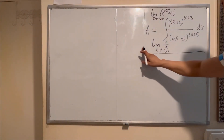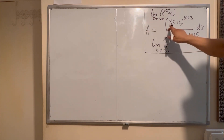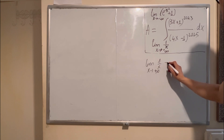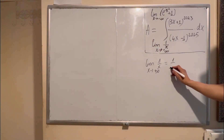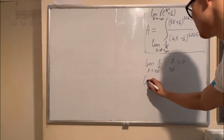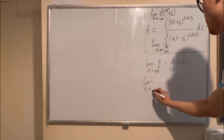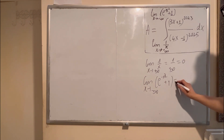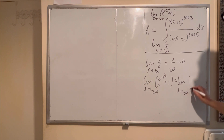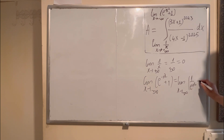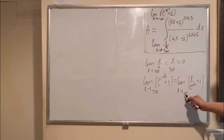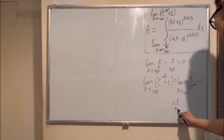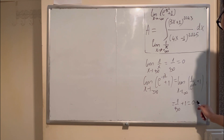First, I have to find the minimum limit and maximum limit of this integration. If x goes to positive infinity, 1 over x gives 1 over positive infinity, which equals zero. And for the maximum, x goes to negative infinity of e^(x²) + 1, which gives 1 over positive infinity plus 1, and that equals zero.